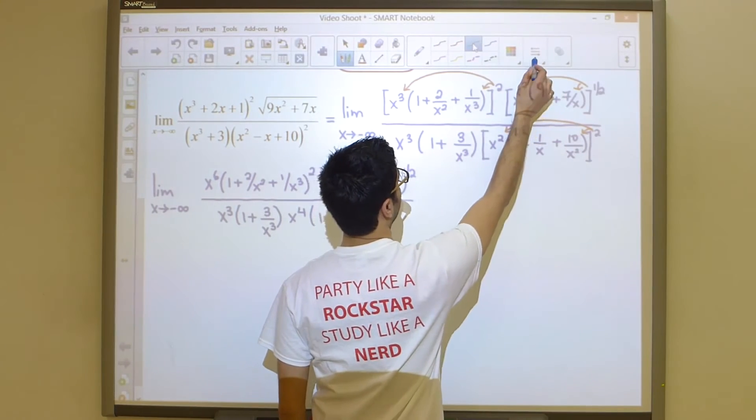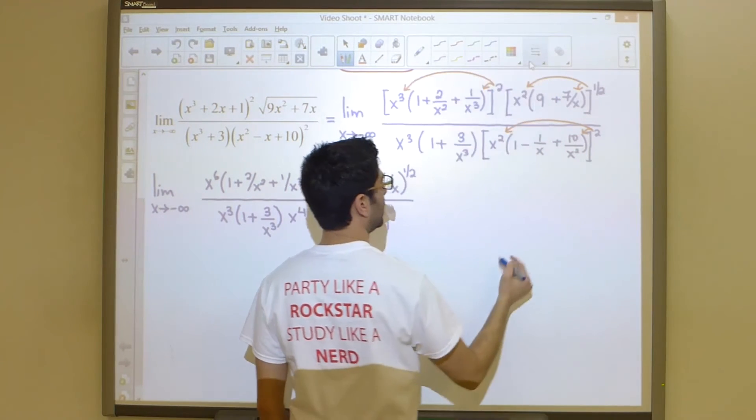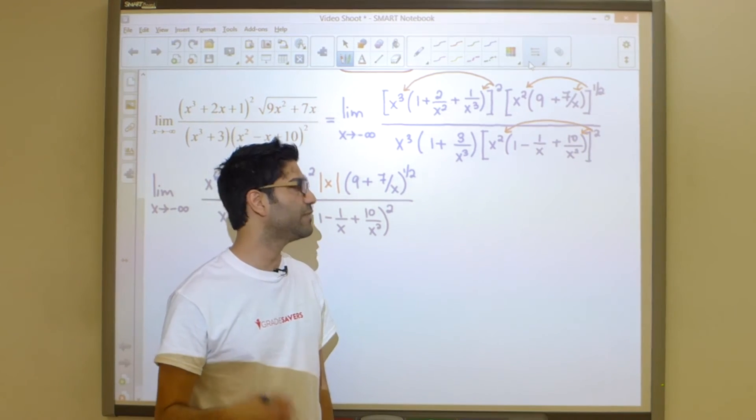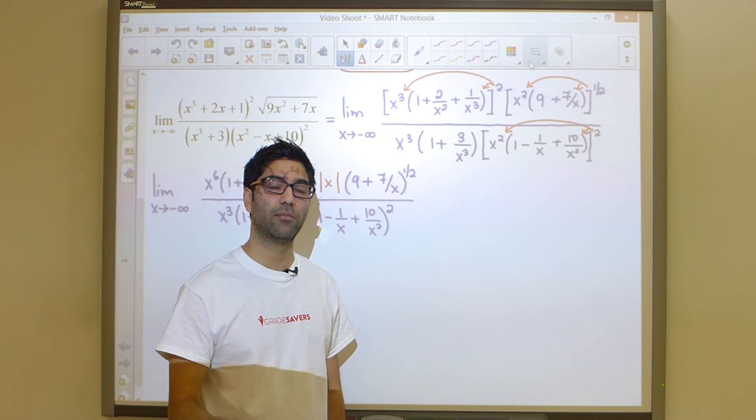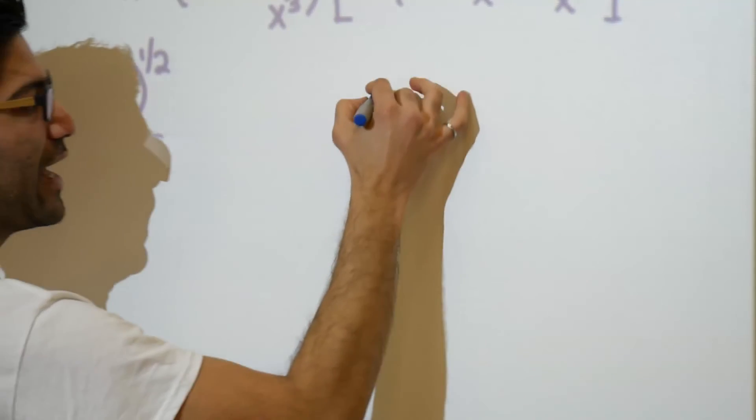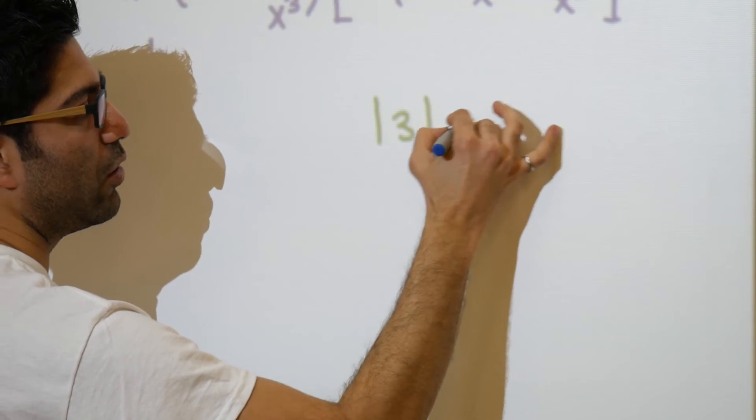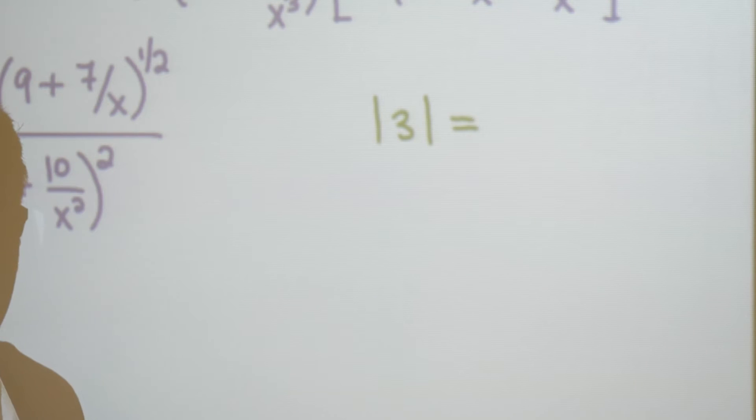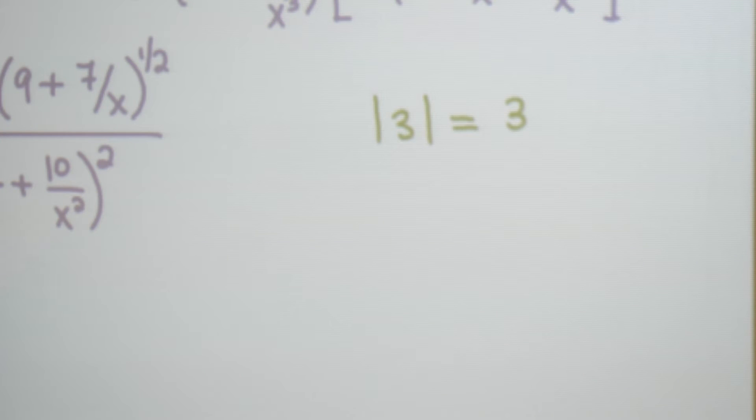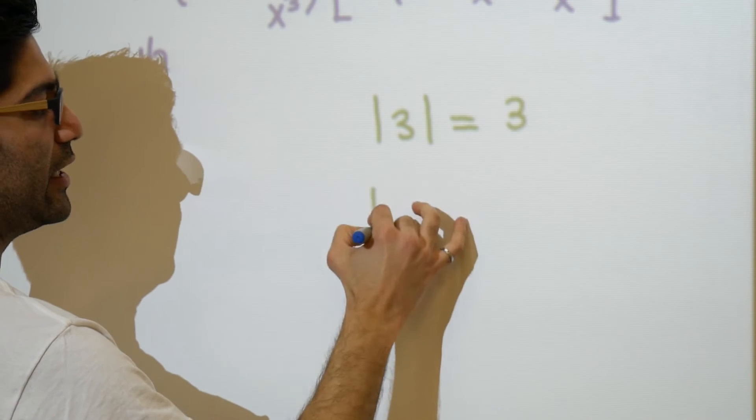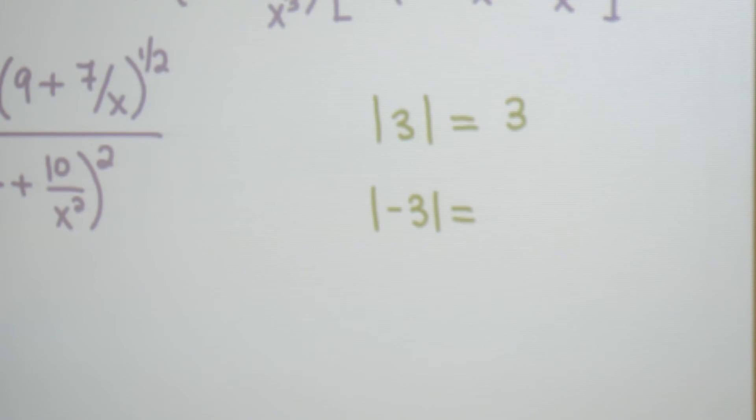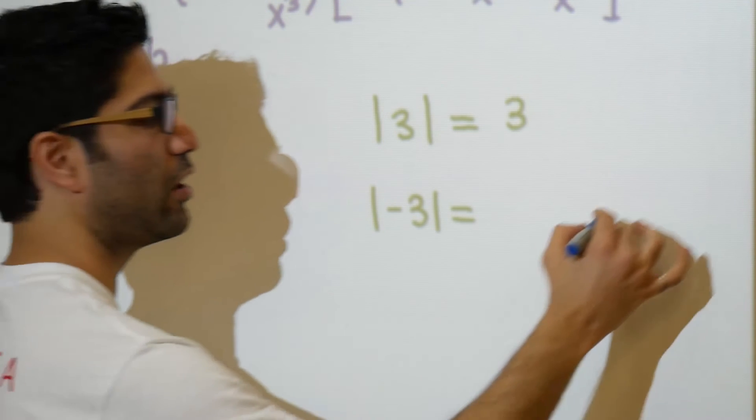So let's do some additional work on this side over here and talk about the absolute value. What we already understand is that the absolute value forces a number, or whatever it contains within the parentheses, to be positive. So for instance, if I have the absolute value of 3, we know that the absolute value is really not doing anything; we can simply remove it.